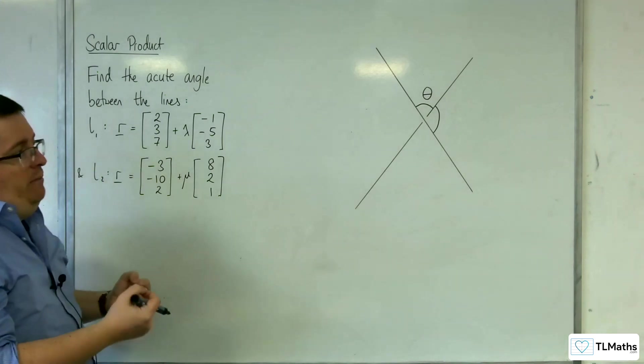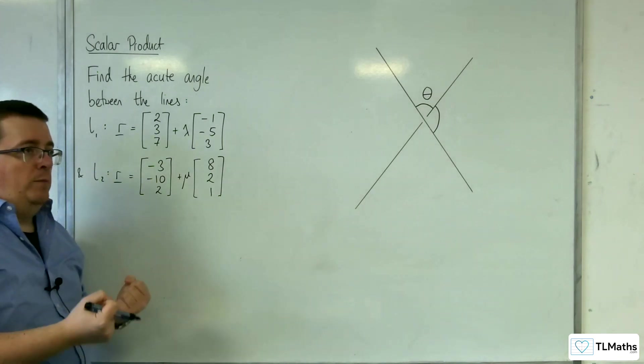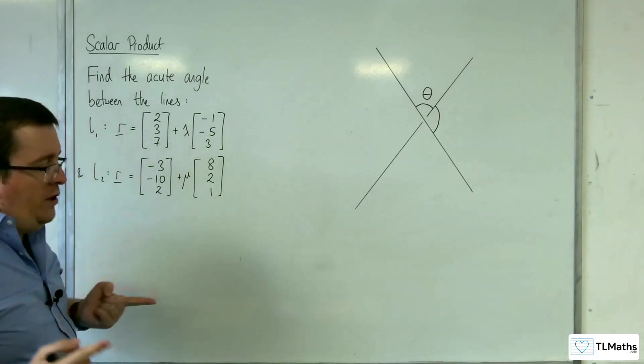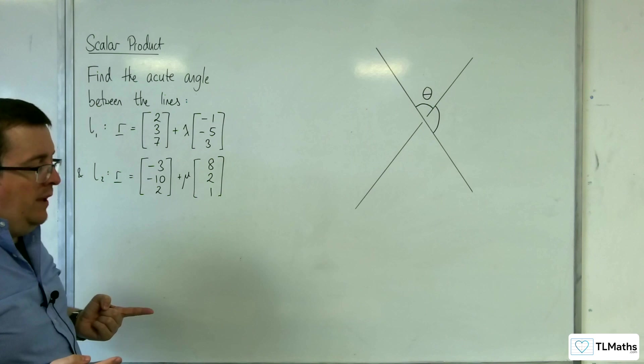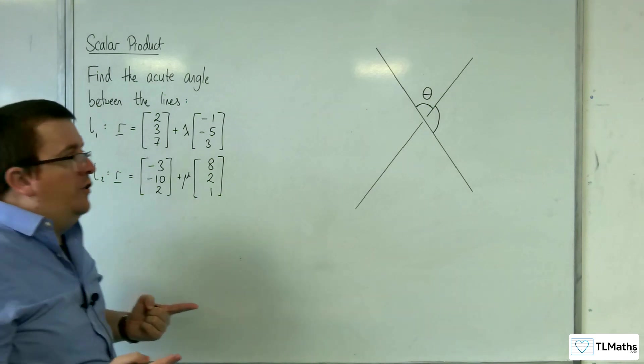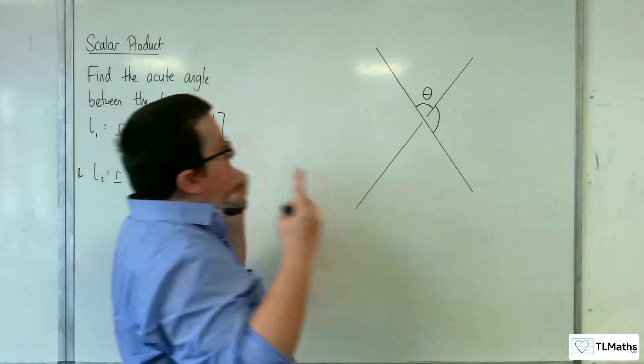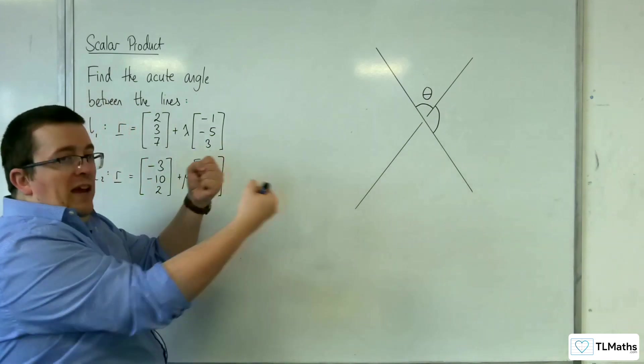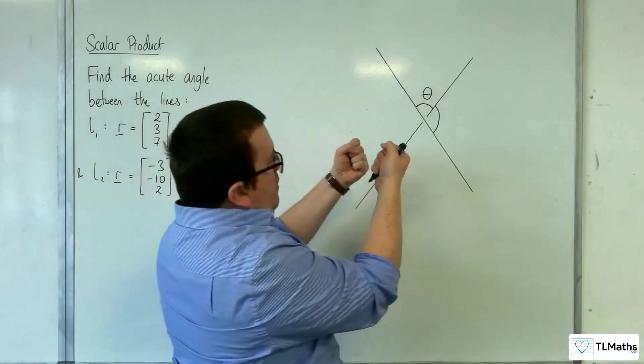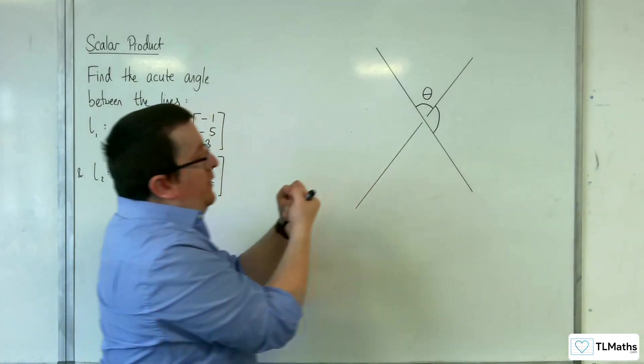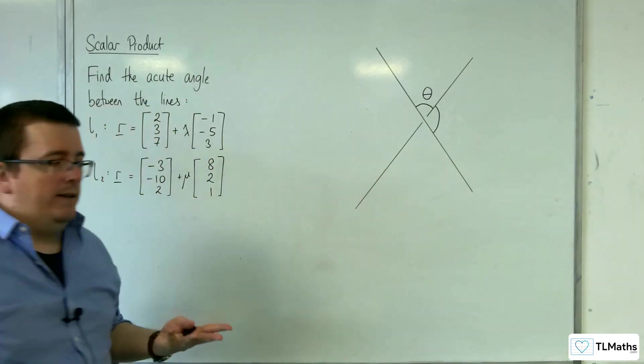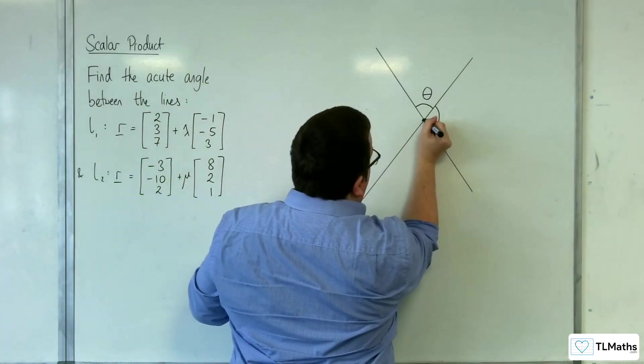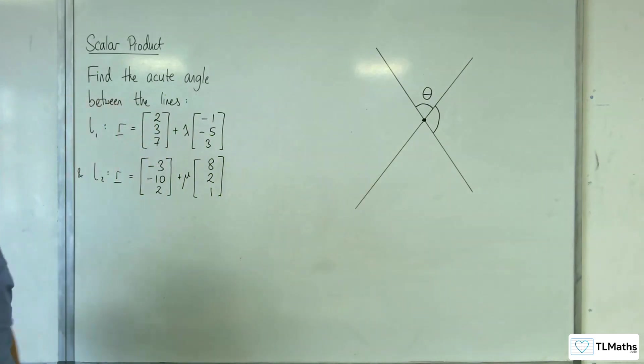Now, it may seem strange that you're going to be finding the angle between two lines that don't intersect. What you need to think about is imagine that you are going to pick up these two lines and you're going to maintain the same angle and you're going to reposition them so they are both going through the origin effectively. So imagine that they do both intersect and they now go through the origin.